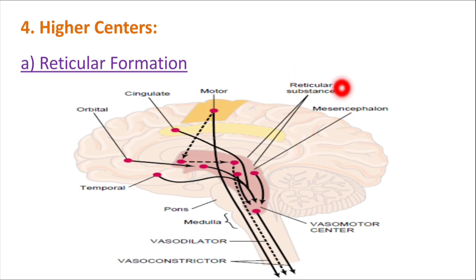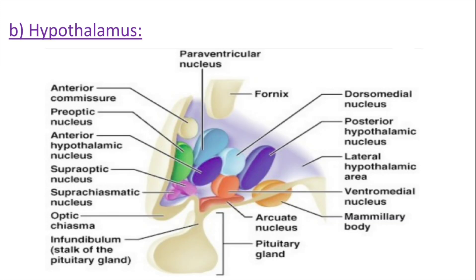Among the higher centers, the reticular formation of the pons, midbrain, and medulla oblongata can either excite or inhibit the vasomotor center. The lateral and superior portions of the reticular formation cause excitation of the vasomotor center, while the medial and inferior portions cause inhibition. The posterior portions of the hypothalamus usually cause excitation of the vasomotor center, and the anterior portions of the hypothalamus usually cause mild excitation or inhibition.